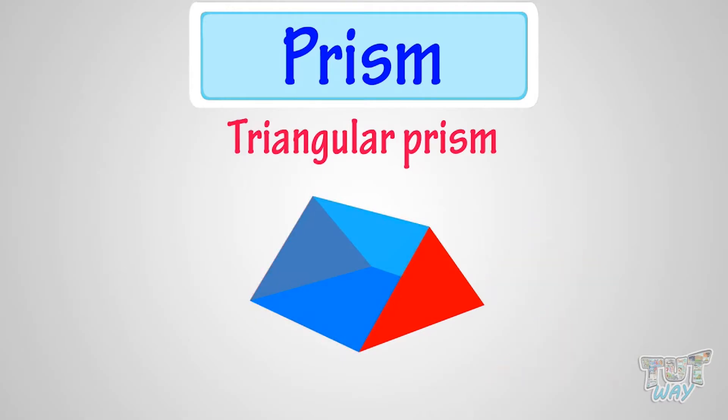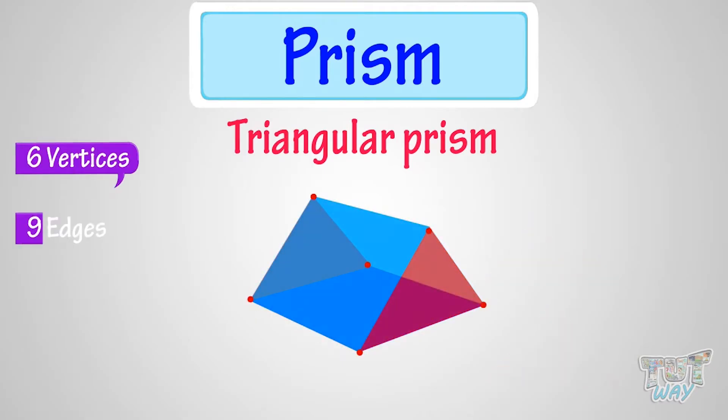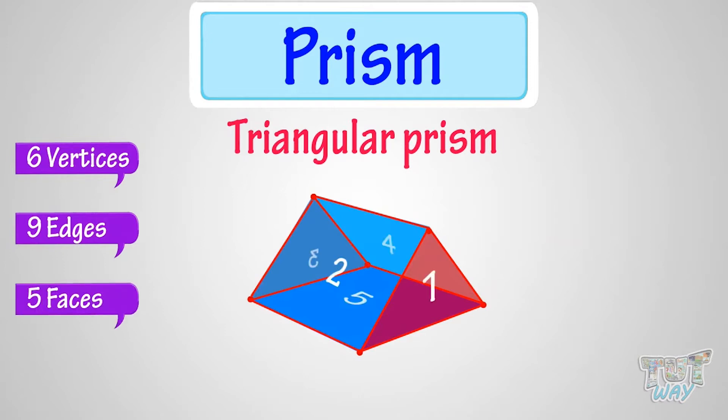because its top and bottom faces are triangle in shape, and all other faces are rectangular. It has 6 vertices, 9 edges, and 5 faces.